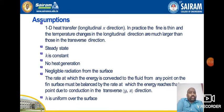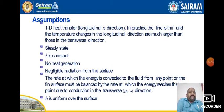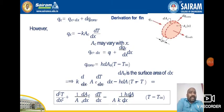We have certain assumptions for deriving the temperature distribution. First, one-dimensional heat transfer longitudinal in the x-direction — in practice the fin is thin and temperature changes in the longitudinal direction are much larger than the transverse. Second, steady state. Third, K is constant — thermal conductivity throughout the material is uniform. Fourth, no internal heat generation. Fifth, negligible radiation — only conduction and convection are considered. Sixth, the heat transfer coefficient H is uniform over the surface.